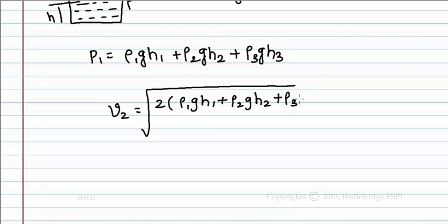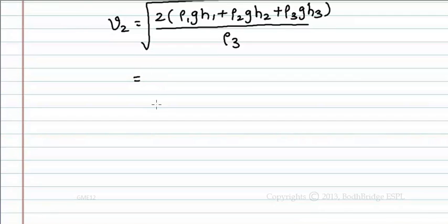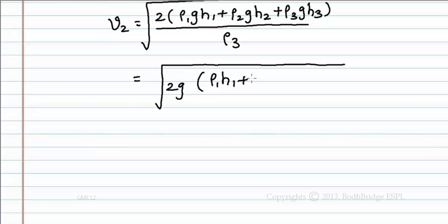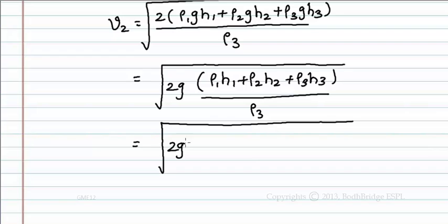Now take g as common. Now multiply and divide the numerator and denominator with h3, that is root of 2gh3 into rho1 h1 plus rho2 h2 plus rho3 h3 by rho3 h3.